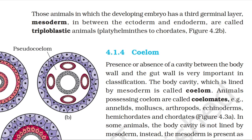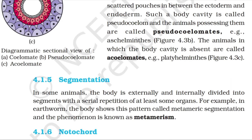Topic 4.1.4: Coelom. Presence or absence of a cavity between the body wall and the gut wall is very important in classification. The body cavity which is lined by mesoderm is called coelom. Animals possessing coelom are called coelomates — examples: annelids, mollusks, arthropods, echinoderms, hemichordates and chordates. In some animals, the body cavity is not lined by mesoderm; instead, mesoderm is present as scattered pouches between the ectoderm and endoderm. Such a body cavity is called pseudocoelom and animals possessing them are called pseudocoelomates — example: Aschelminthes. Animals in which the body cavity is absent are called acoelomates — example: Platyhelminthes.